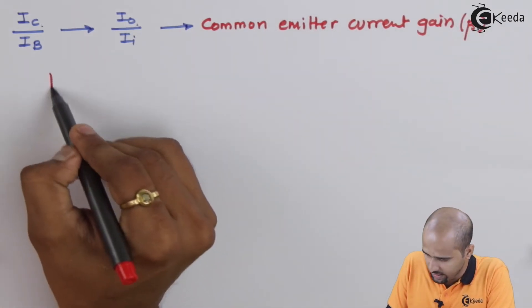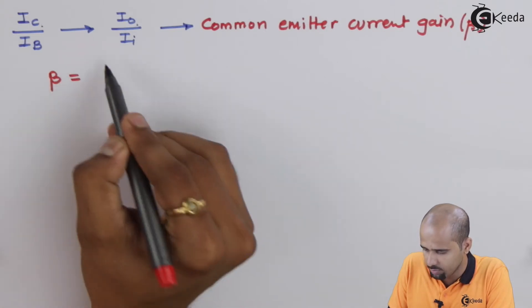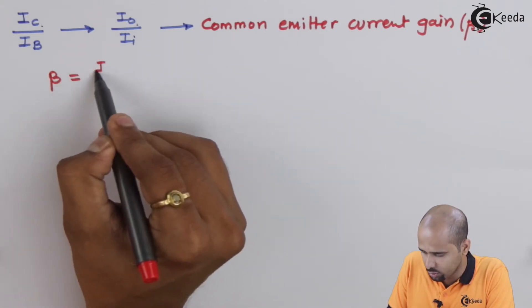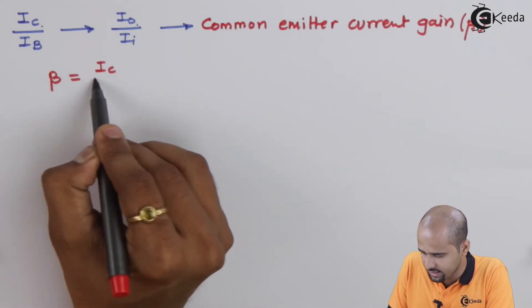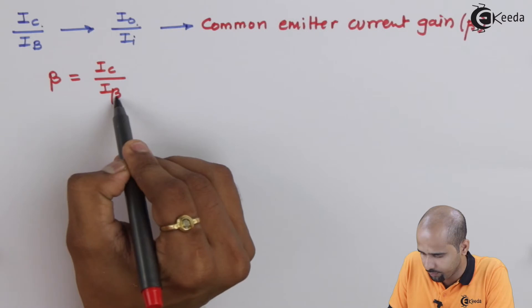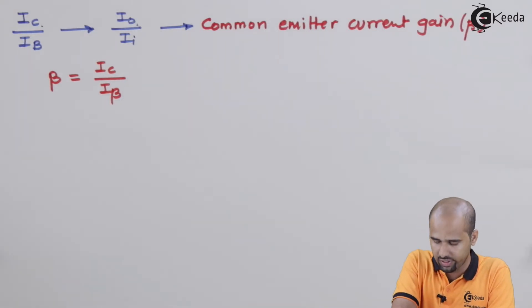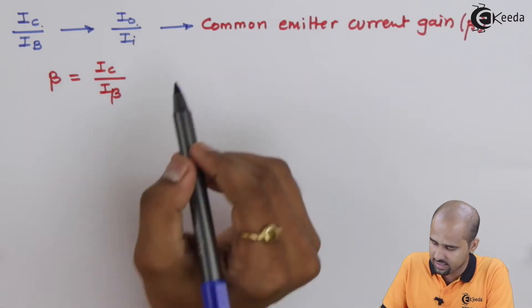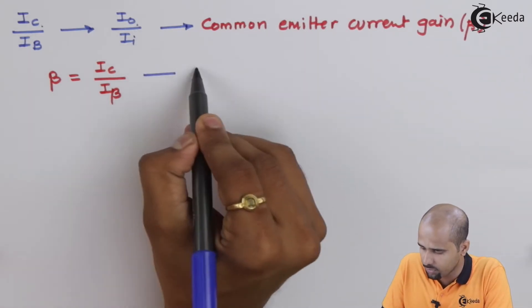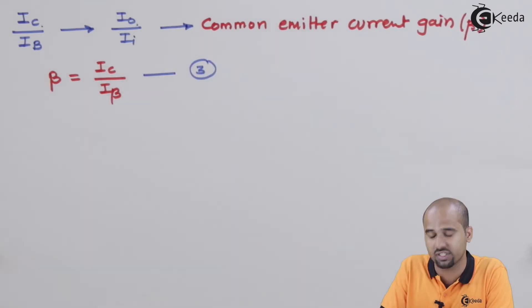The common emitter current gain is generally expressed as beta. So beta is equal to IC divided by IB. This is equation number 3.